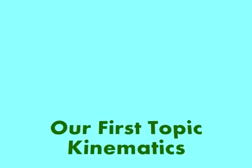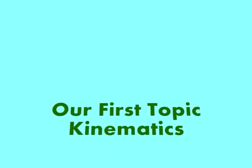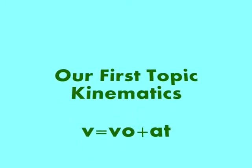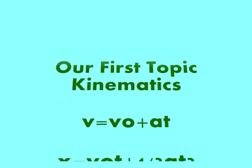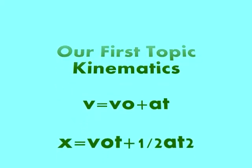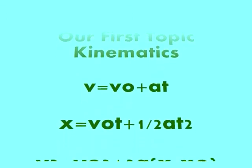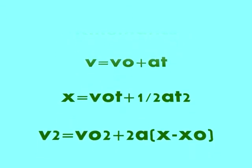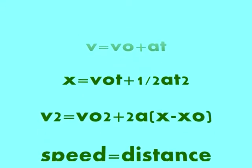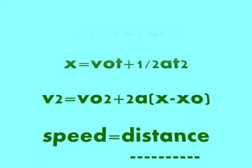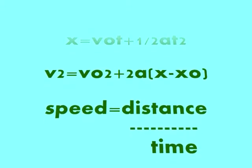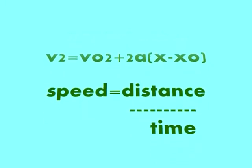Now, a couple of formulas you need to know for kinematics are: final velocity is equal to initial velocity plus acceleration times time. The distance, or x, is equal to initial velocity times time plus one-half the acceleration times time squared. Another one is final velocity squared is equal to initial velocity squared plus two times acceleration times the change in distance. And finally, speed is equal to distance over time.